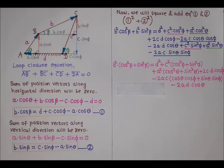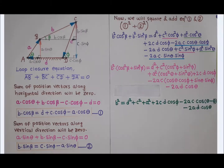Applying trigonometric identities: cos²(beta) + sin²(beta) = 1, cos²(phi) + sin²(phi) = 1, and cos²(theta) + sin²(theta) = 1. Also, cos(theta)·cos(phi) + sin(theta)·sin(phi) = cos(theta − phi). Hence the simplified relation becomes: B² = D² + C² + A² + 2CD·cos(phi) − 2AC·cos(theta − phi) − 2AD·cos(theta).